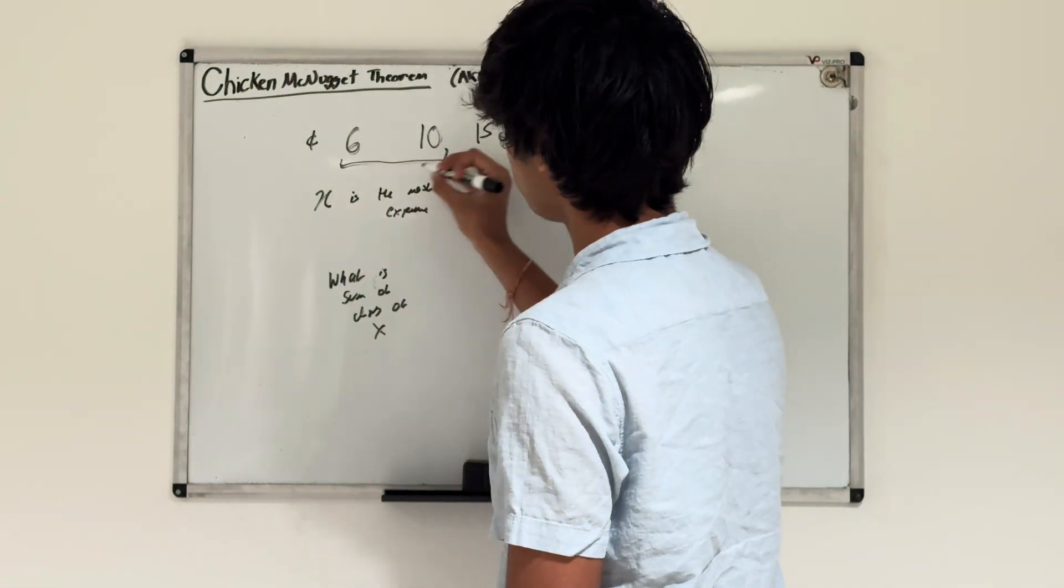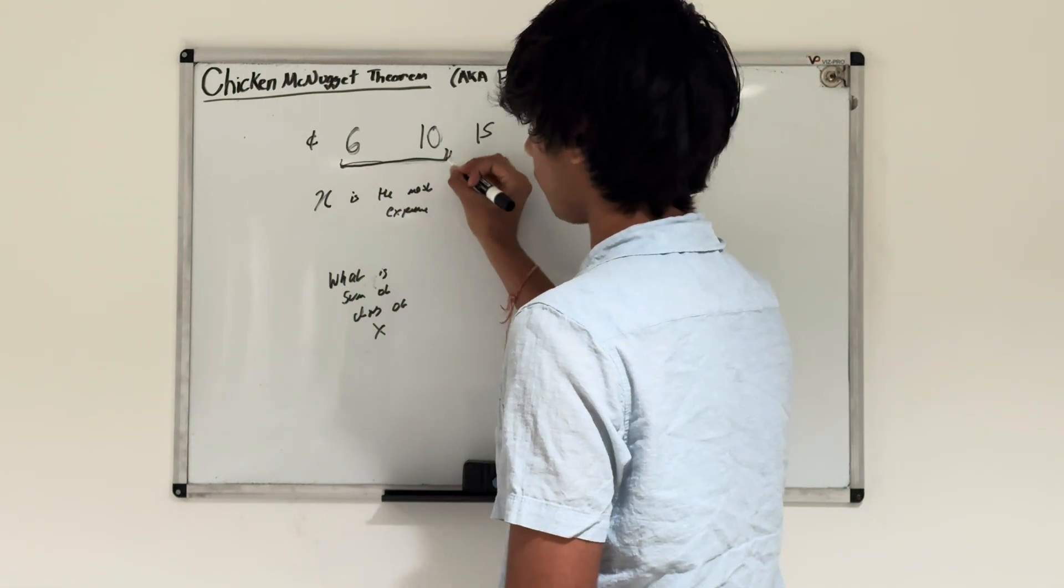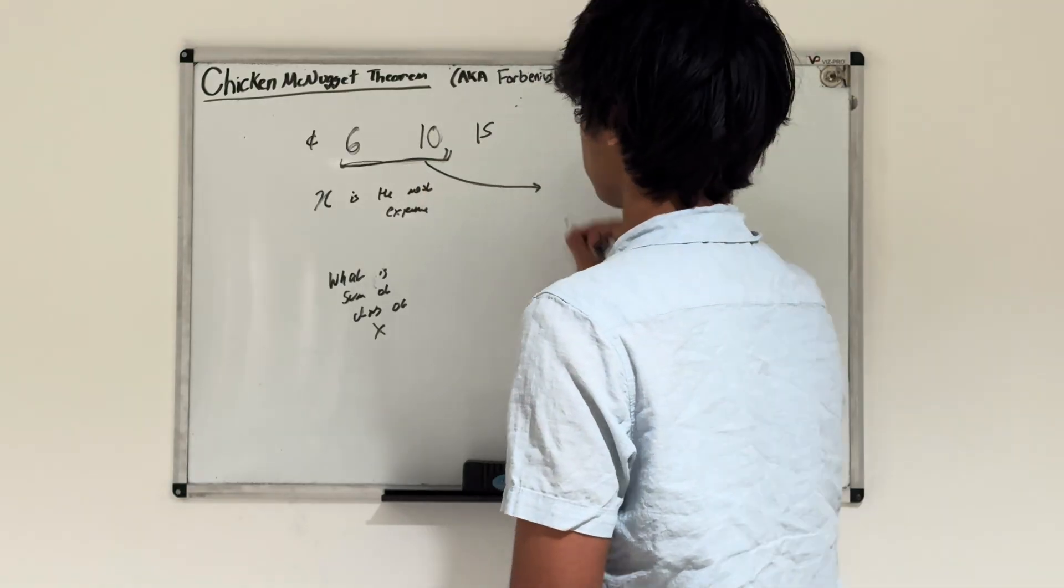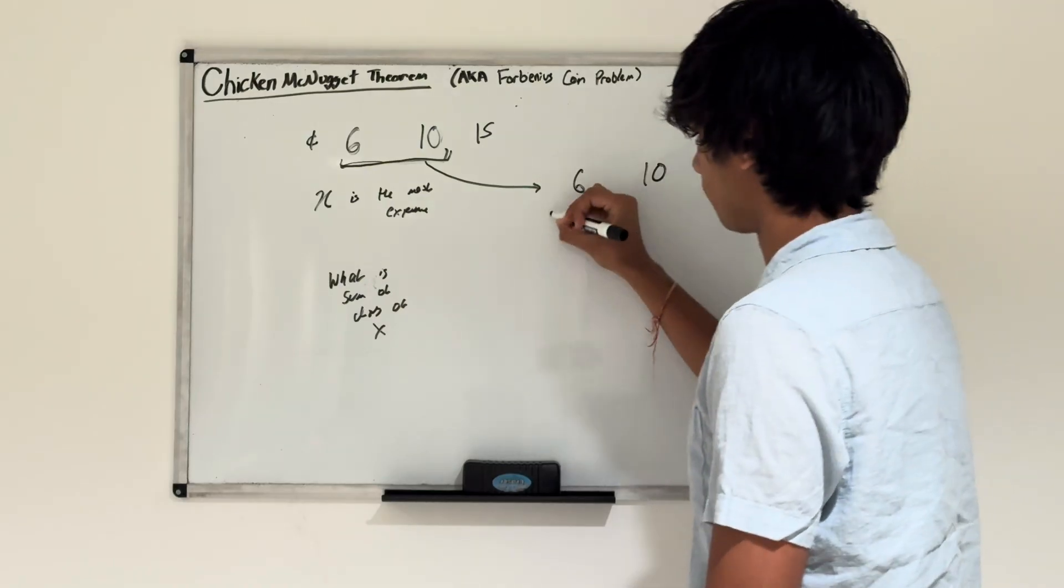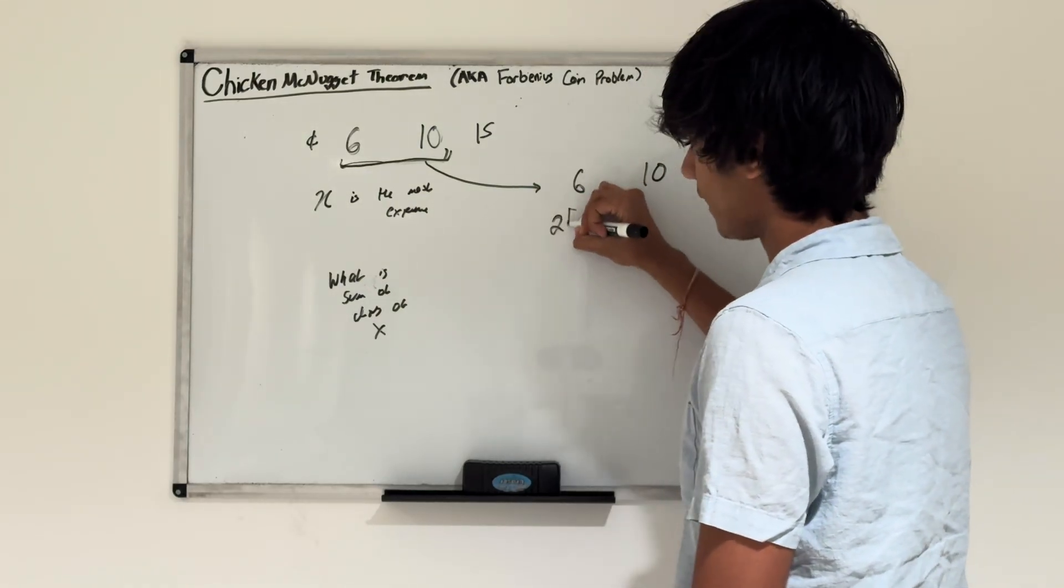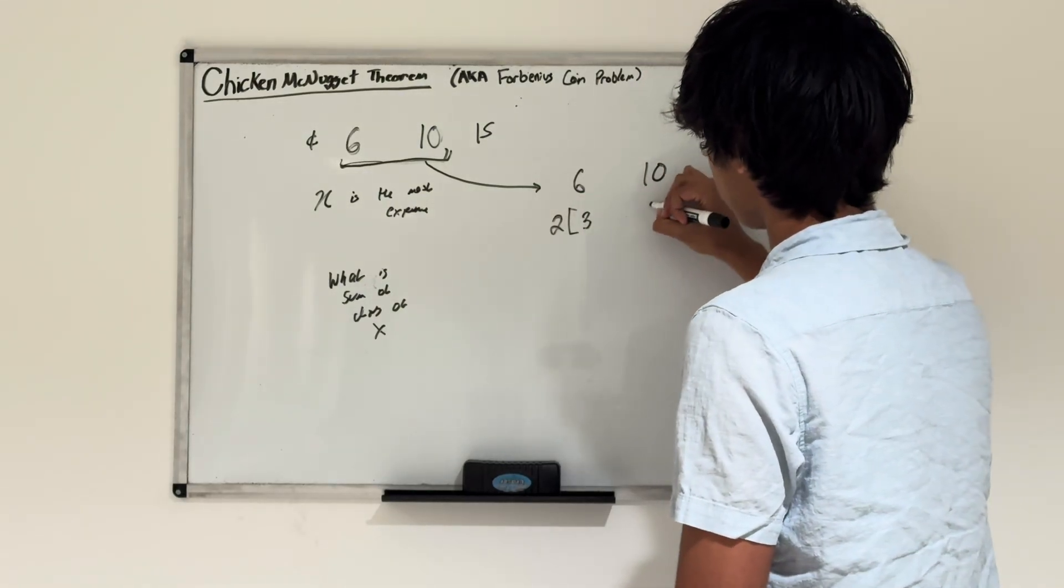We can look at 6 and 10. I know they're not relatively prime because they're both even, therefore they share a factor of 2. So what if I took out that 2? If I factor out the 2, I get 3 and 5.